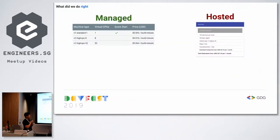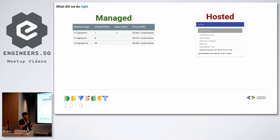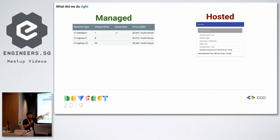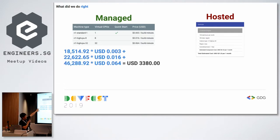On the left is Cloud Build's pricing documentation showing three build machine types and their cost per build minute. On the right is the cost of a single self-hosted 32-core VM. I'm assuming all workflows could run on the 32-core machine for a fair comparison. Based on our 87,000 build minutes, Cloud Build cost approximately $3,000 versus $6,000 for the self-hosted solution.